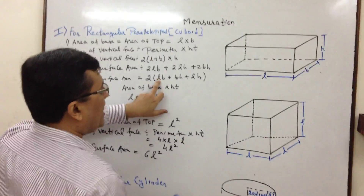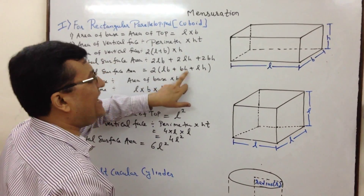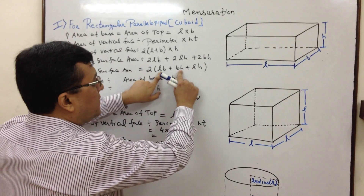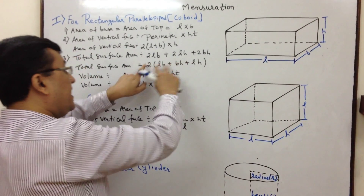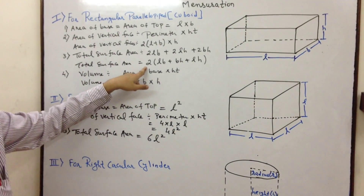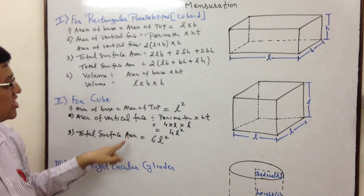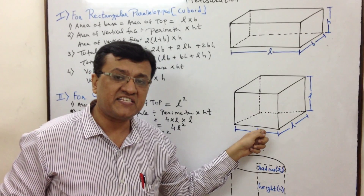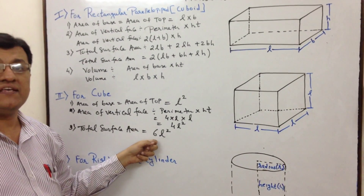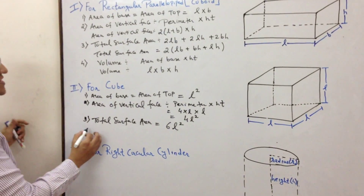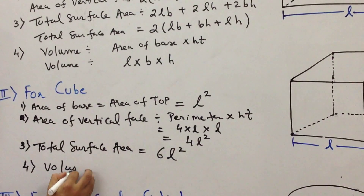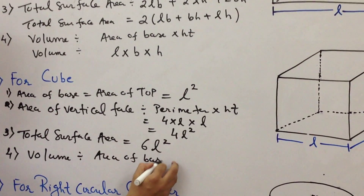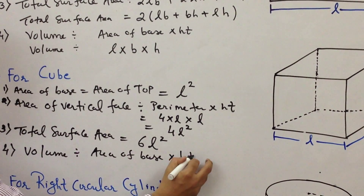We can also correlate using the rectangular parallelepiped formula. Substituting all dimensions as L: 2(L + L) into height = 2 × 2L into L = 4L into L = 4L². Both methods — the perimeter formula and the correlation — give the same result: area of vertical faces is 4L².